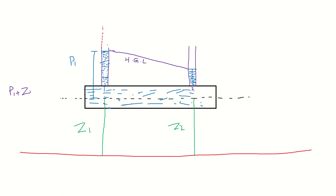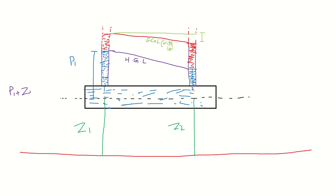For the energy gradient line (EGL), we add the velocity head as well. Adding a velocity head measurement device at both points and connecting them gives another inclined line — inclined because of losses. If we add those losses back, the EGL without losses would be a straight horizontal line. So: EGL with losses is inclined, EGL without losses is straight, and the difference between them represents the head loss.